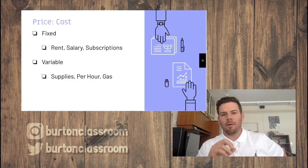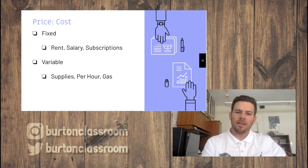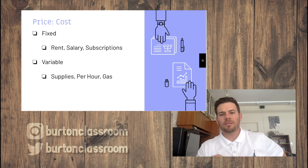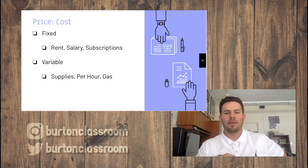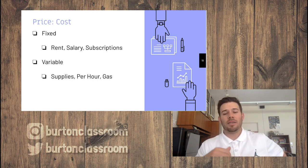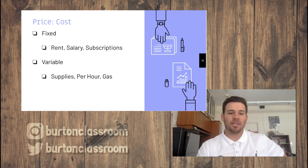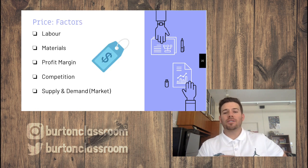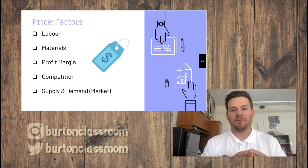With pricing overall, we look at cost — fixed costs and variable costs. Fixed costs don't change month to month: rent, salary, subscriptions. Variable costs change week to week: supplies, hourly workers, gas.